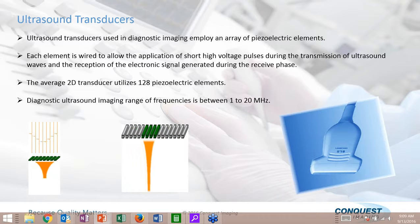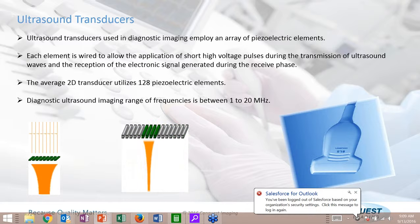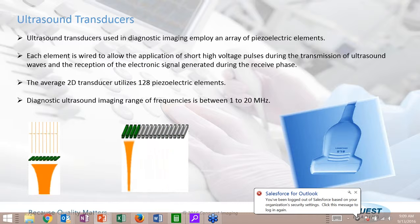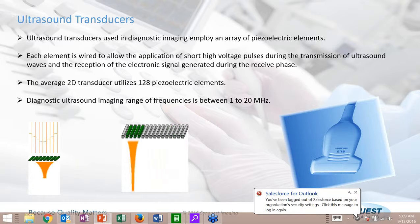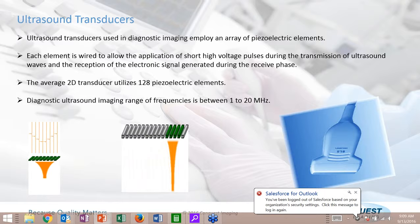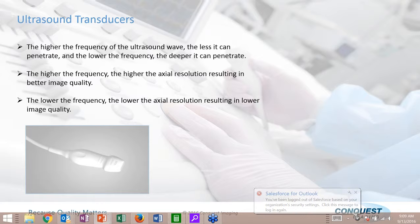Contemporary ultrasound transducers have a lot of crystals that comprise a transducer. Early transducers had single crystals, but contemporary transducers have up to 4,000 to 8,000 various elements. Each element is wired to the ultrasound system and pulsed with an electrical pulse. The average two-dimensional transducer has 128 piezoelectric elements, and the diagnostic ultrasound imaging range of frequencies is between 1 and 20 MHz.